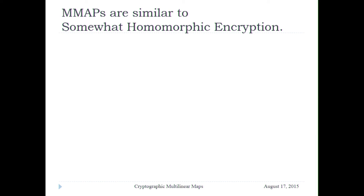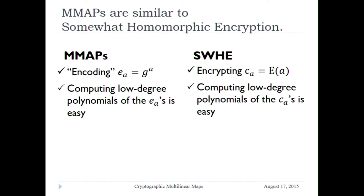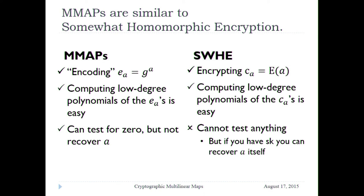When you talk about computing on encrypted data, the thing that comes to mind today, six years after 2009, is homomorphic encryption. We already know how to compute on hidden data — encrypt it using homomorphic encryption and then you can compute. Indeed, multilinear maps are similar in some ways to somewhat homomorphic encryption. They both have this way of hiding the data that you care about, either encoding or encryption, and both allow you to compute some low-degree polynomials on the data once it's in hidden form.